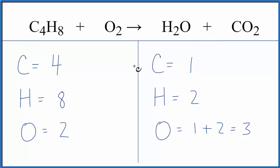I have 4 carbons, 1 here. Let's put a 4 in front of the CO2. So I have 1 times 4. So now the carbons are balanced.